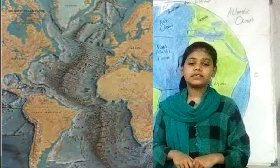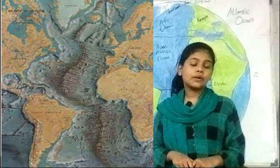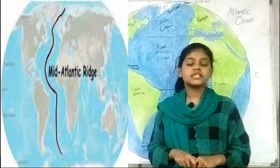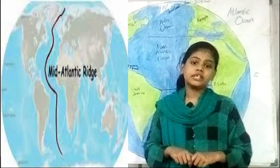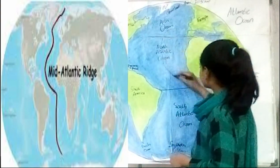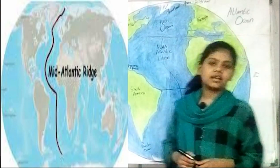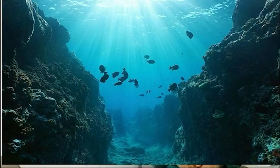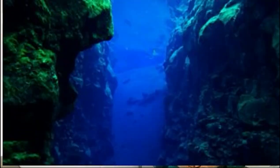Icebergs are mostly either white, bluish, or pale pink, especially in the Southern Ocean. The Mid-Atlantic Ridge, also known as the Mid-Ocean Ridge, is a massive underwater mountain ridge 1,700 to 4,200 meters below sea level that runs from the Arctic Ocean to the Southern Ocean.